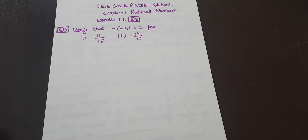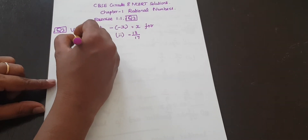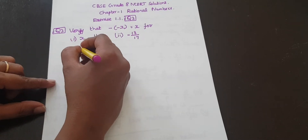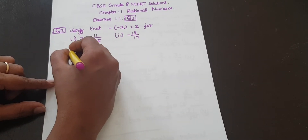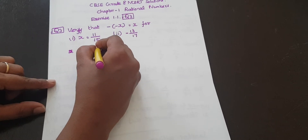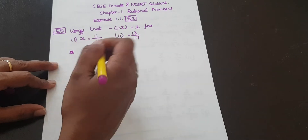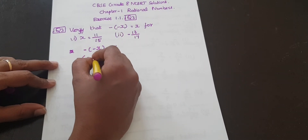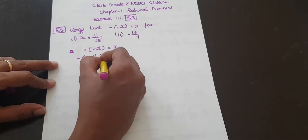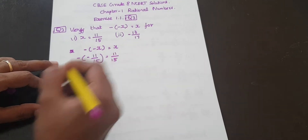Left hand side, right hand side equal — we check that. This is minus. For the first one, x is equal to 11 by 15. So minus minus x is equal to x. This is minus minus 11 by 15 is equal to x value 11 by 15.